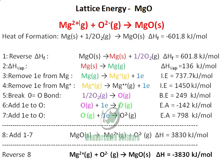Magnesium ion combining with oxide ion gives magnesium oxide solid. This is how we calculate the lattice energy of magnesium oxide.